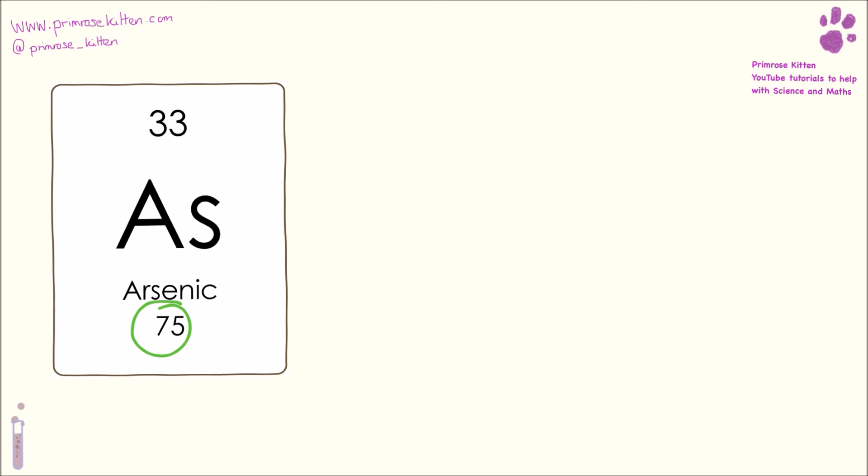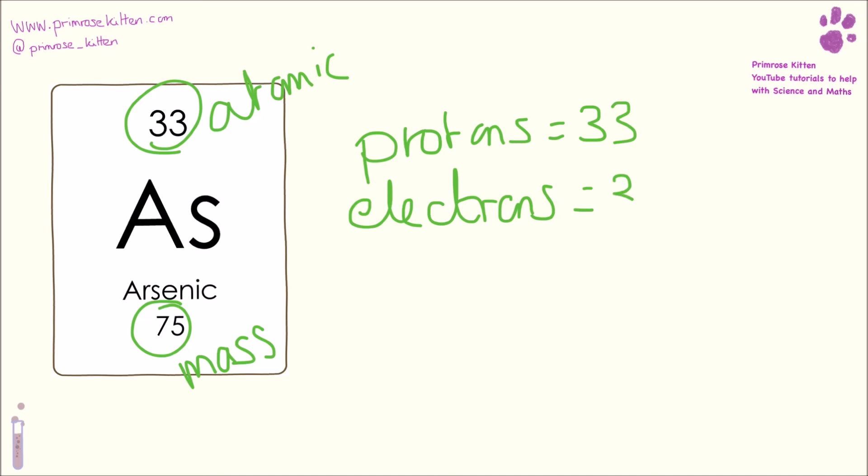Arsenic now. Here is the mass number, here is the atomic number, so protons equals 33, electrons equal 33, and neutrons equal 75 minus 33, which is 42.